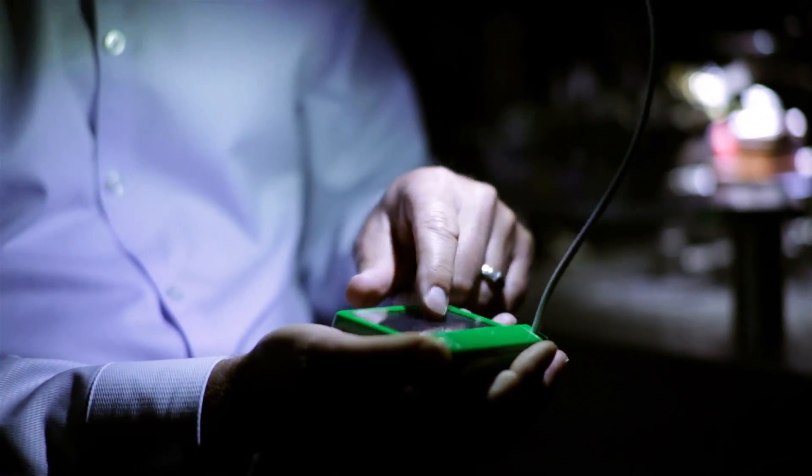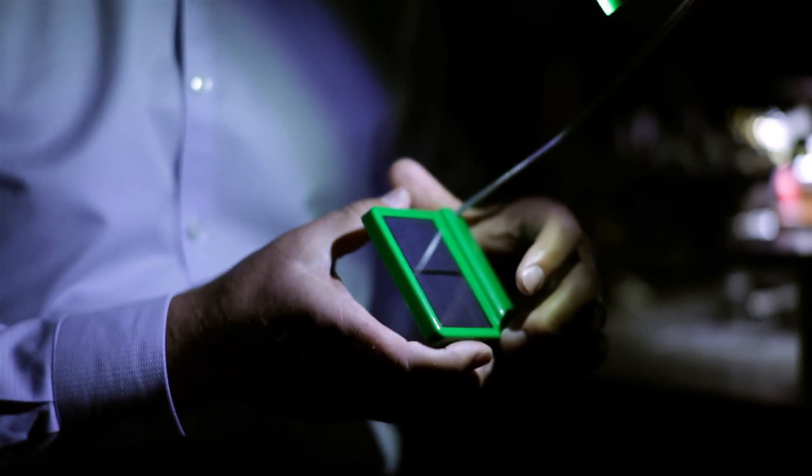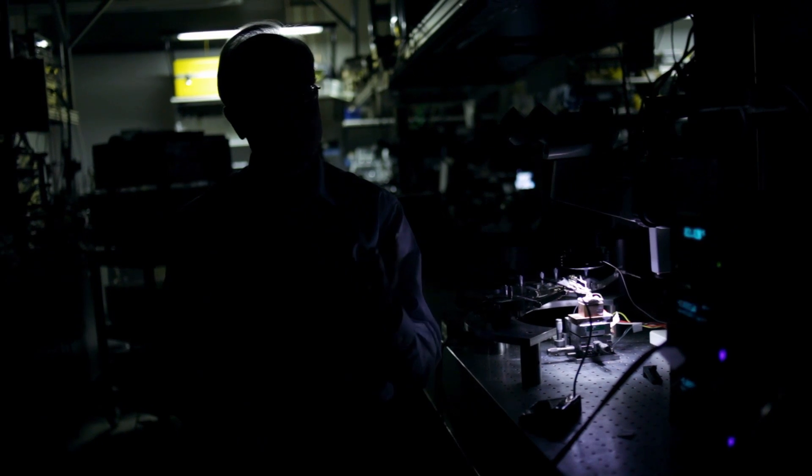So this is a solar-powered light. The problem we're solving is that 1.4 billion people don't have electricity. And so this is what it's like at night. You don't read, you just pretty much go to bed.